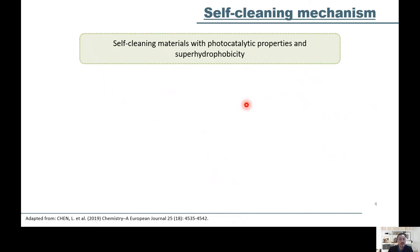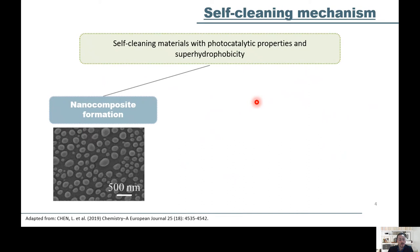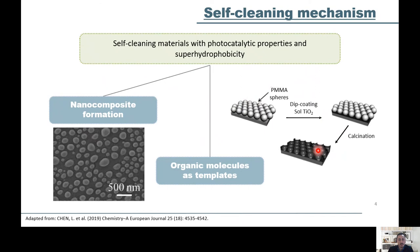Three material synthesis approaches can be used for the development of this type of materials. The first one involves the preparation of nanocomposites with specific morphology and roughness. The second approach involves the preparation of surfaces with roughness pattern using, for example, organic molecules, polymers as templates.